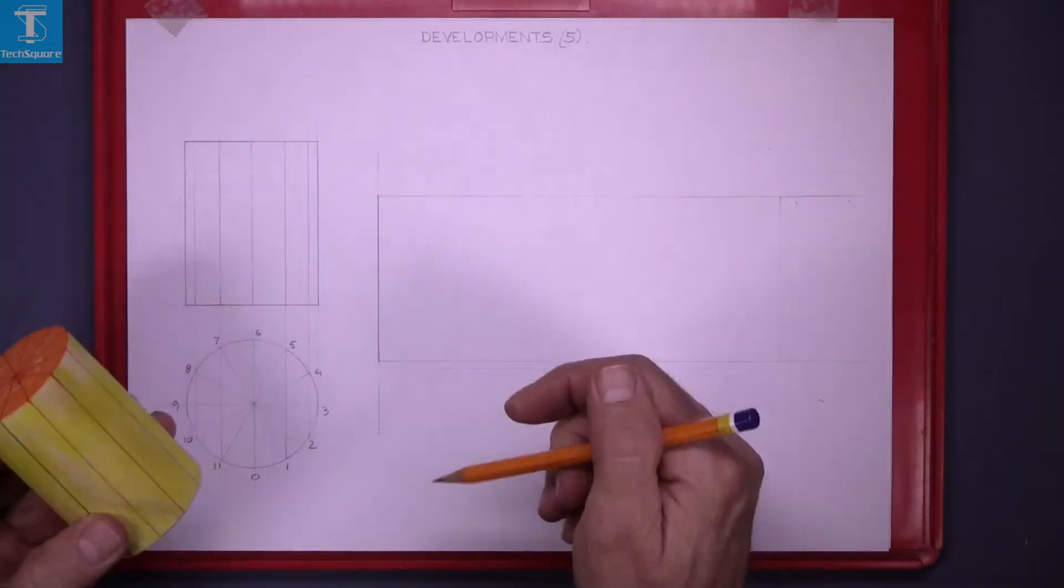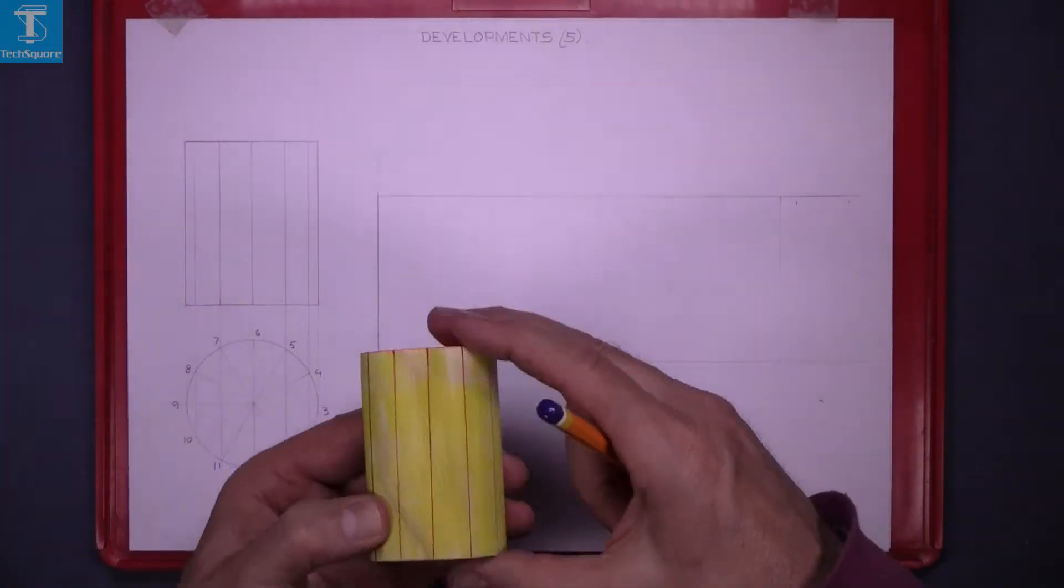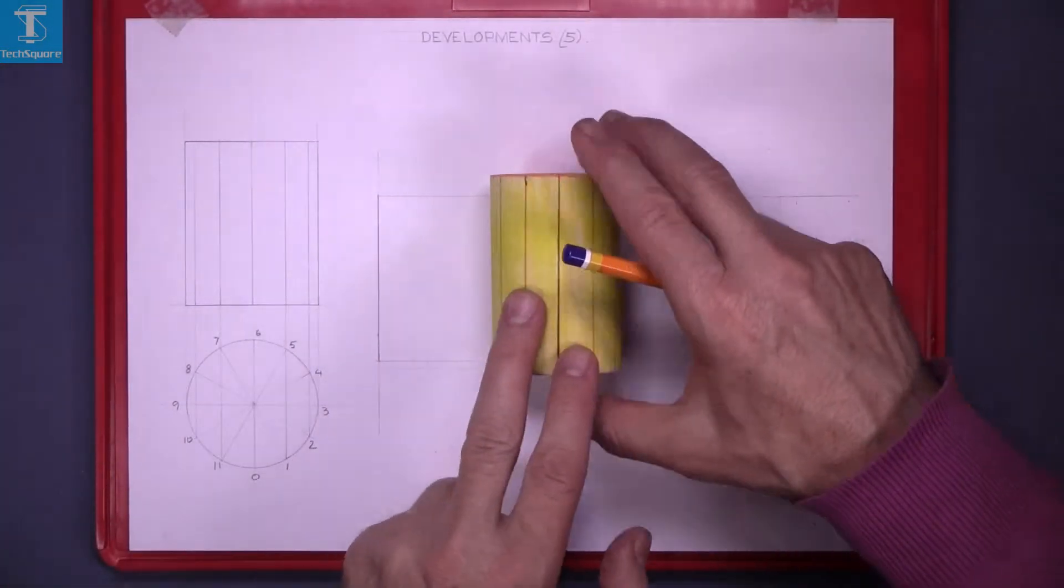That's the elevation of it. We're asked to draw the surface development so we're going to roll out the surface like that.